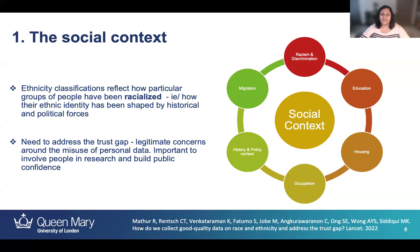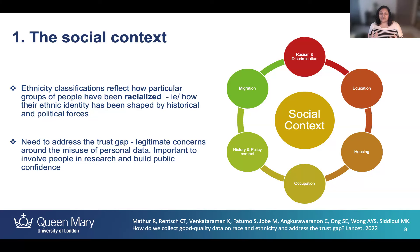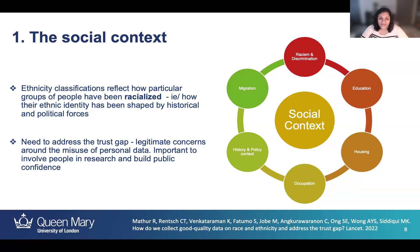In the social context, the ethnicity classification we use actually reflects how people have been racialized — how their ethnic identity has been shaped by historical and political forces. This means we really need to think about the trust gap when people choose to give their ethnicity data to researchers, healthcare providers, or any large body. There are legitimate concerns about the misuse of personal data, and therefore it's absolutely essential that we involve people in research and build public confidence.